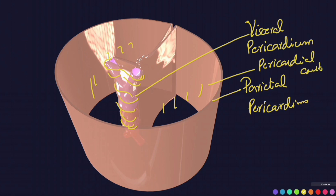A similar arrangement can be seen in other organs. For example, in the case of the stomach, the stomach is wrapped around by intraembryonic splanchnopleuric mesoderm, which forms the definitive visceral peritoneum. It then goes back to form the mesentery of the stomach and is ultimately reflected around the body wall to form the parietal peritoneum.